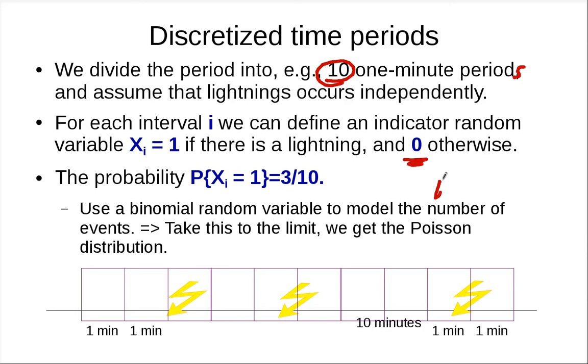So for Poisson distribution, if you want to count the number of time events occur, we can use binomial random variables to model this number of events. And we can take the limit. But we just wait that for now.